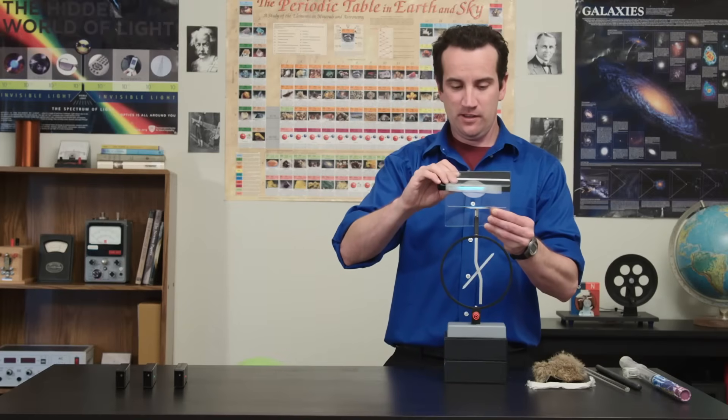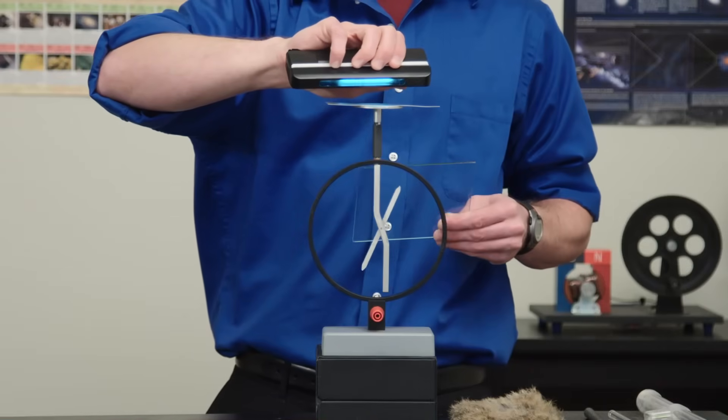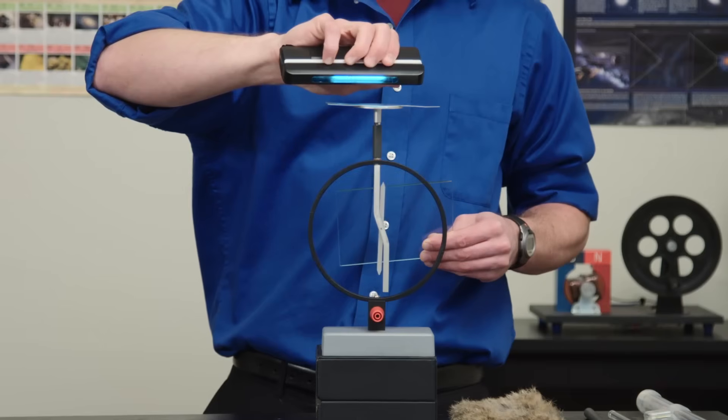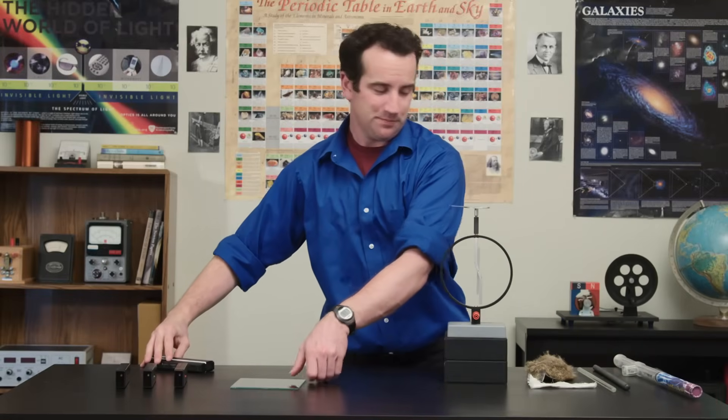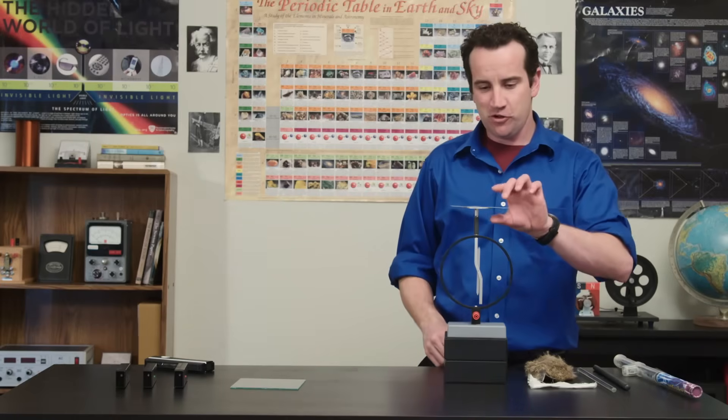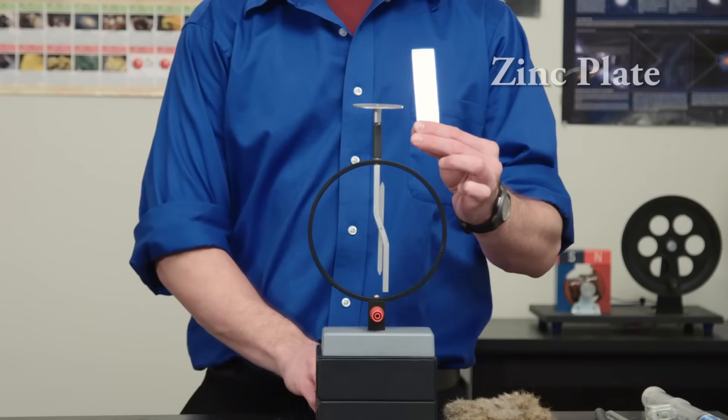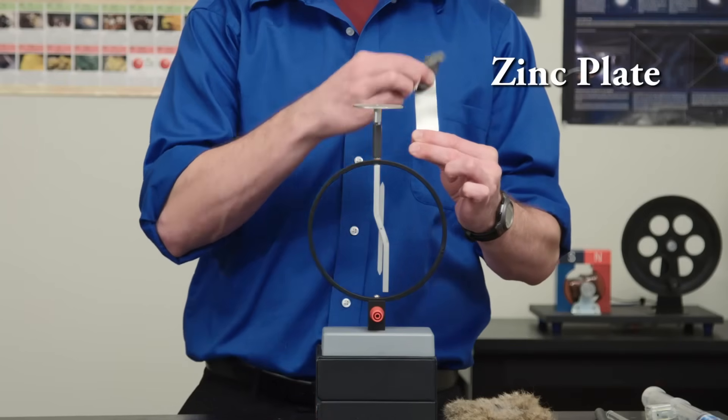Nothing happens. When the glass is removed it discharges again. Some types of ultraviolet light are blocked by glass. On top of the electroscope I've placed a zinc plate which I scrub with steel wool to get rid of the oxide layer.